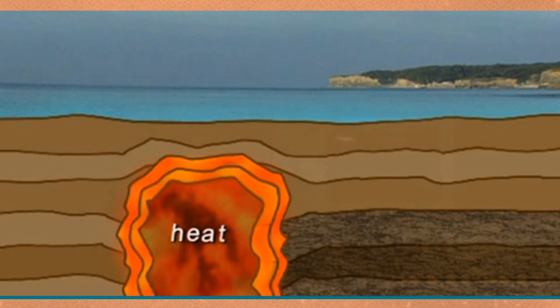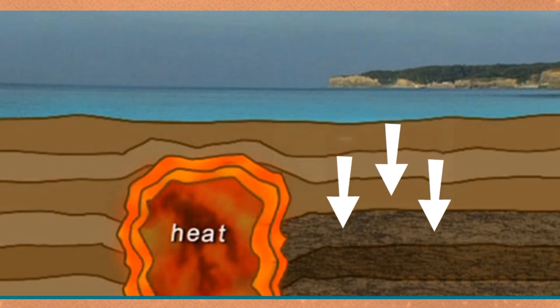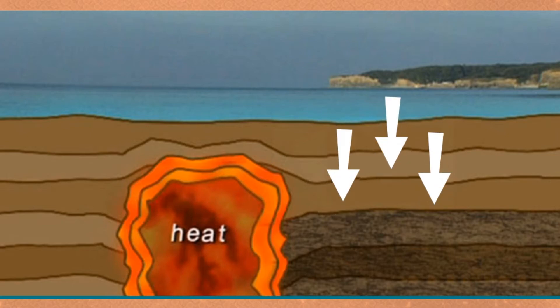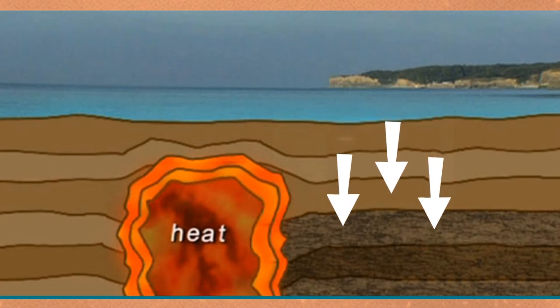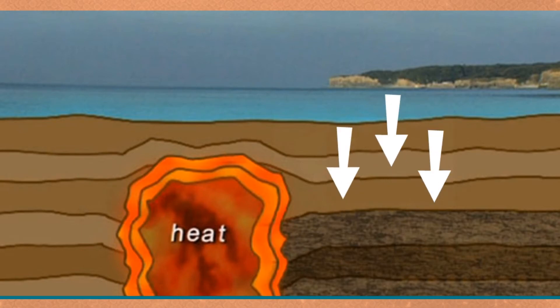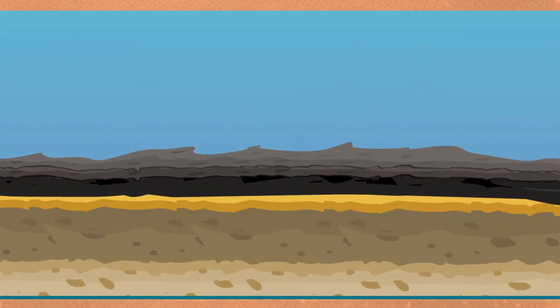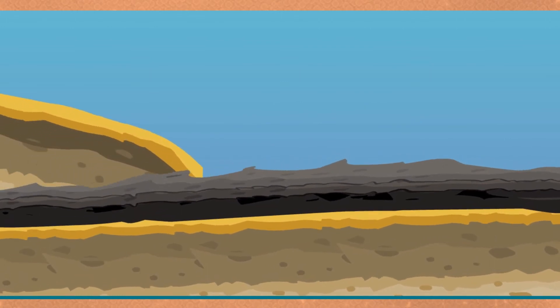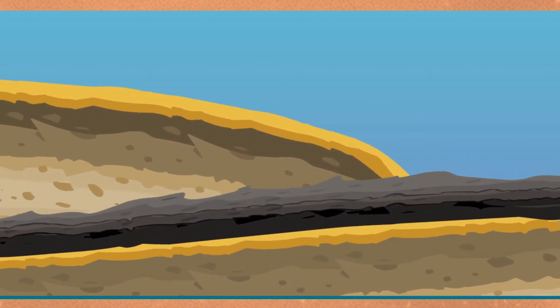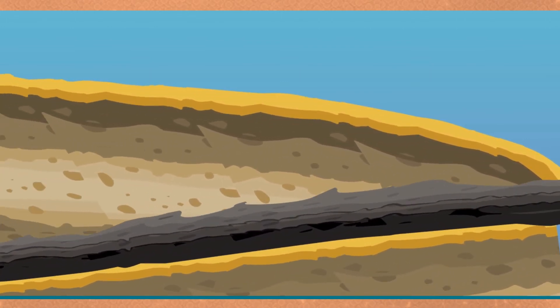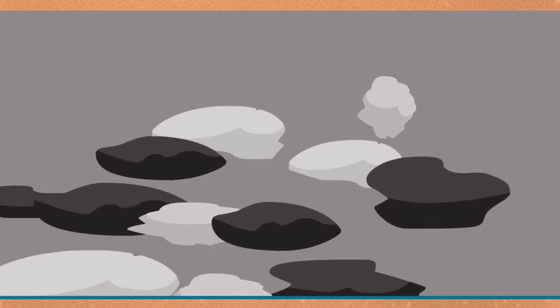Metamorphic rocks form deep in the earth where high temperature and pressure cause one type of rock to change into another type of rock. The heat comes from magma. The pressure comes from layers of rock piled on top of each other. The layers on the bottom get squeezed — the thicker the layers, the more pressure there is. If we squeeze and heat a rock for a few million years, it can turn into a new kind of rock.